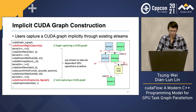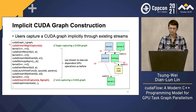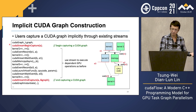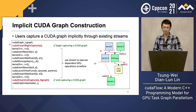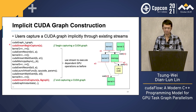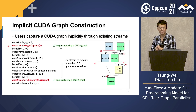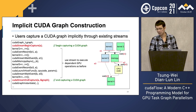Implicit CUDA graph construction refers to capturing a CUDA graph implicitly through existing stream-based API. Compared to explicit construction, implicit capturing is more flexible and requires less effort to migrate existing stream-based GPU code to CUDA Graph, because you only need to turn the stream to a capturing mode and repeat whatever has been written after that stream. When the stream is under capturing mode, every operation inserted into that stream will not launch immediately but will instead be captured into the corresponding node or dependency in the CUDA graph. When you stop capturing, it returns a captured CUDA graph.